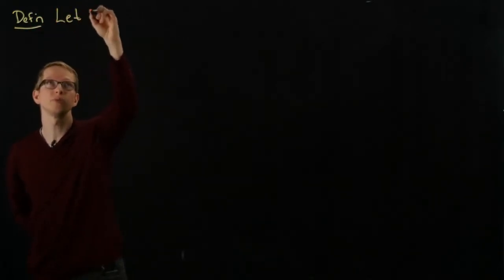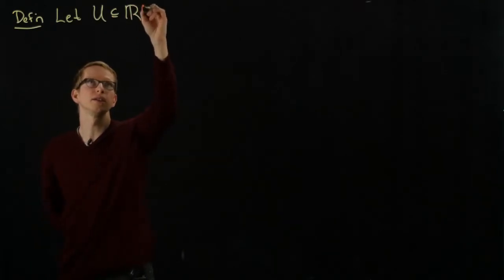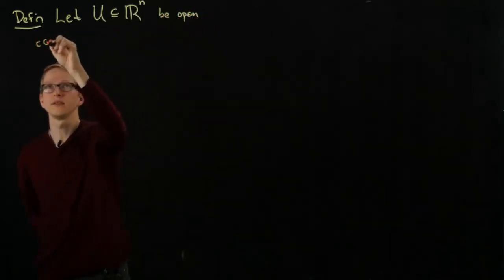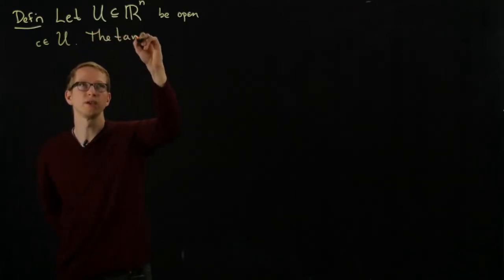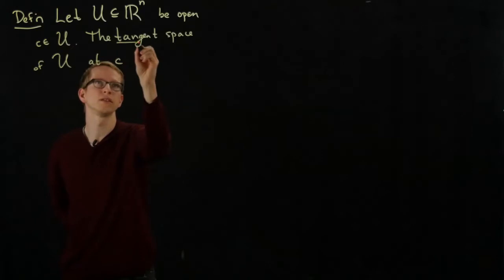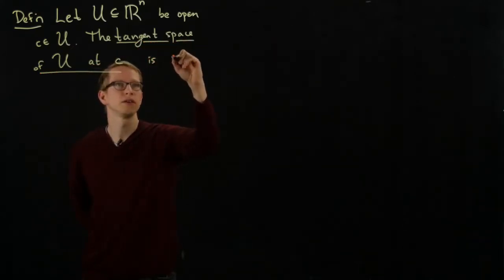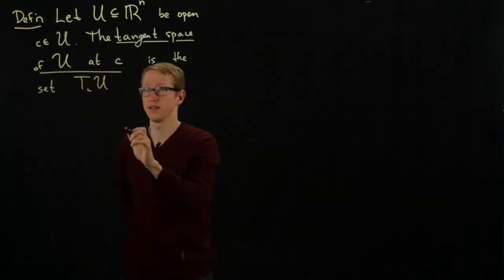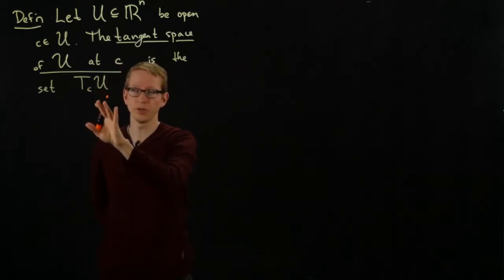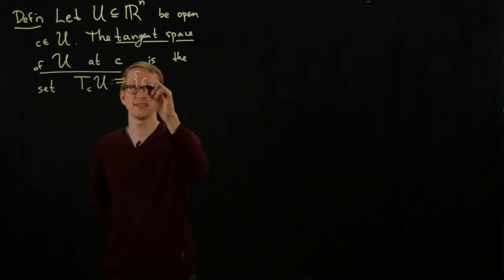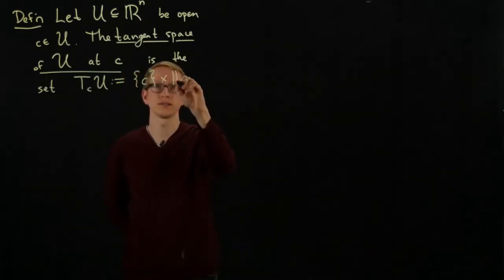So if we take an open set U in Rn and a point c in U, the tangent space of U at c is the set TcU. This is the notation for that set, and what we're essentially doing is putting all of the notation and data into one mathematical object. As a set, it's just c cross Rn.